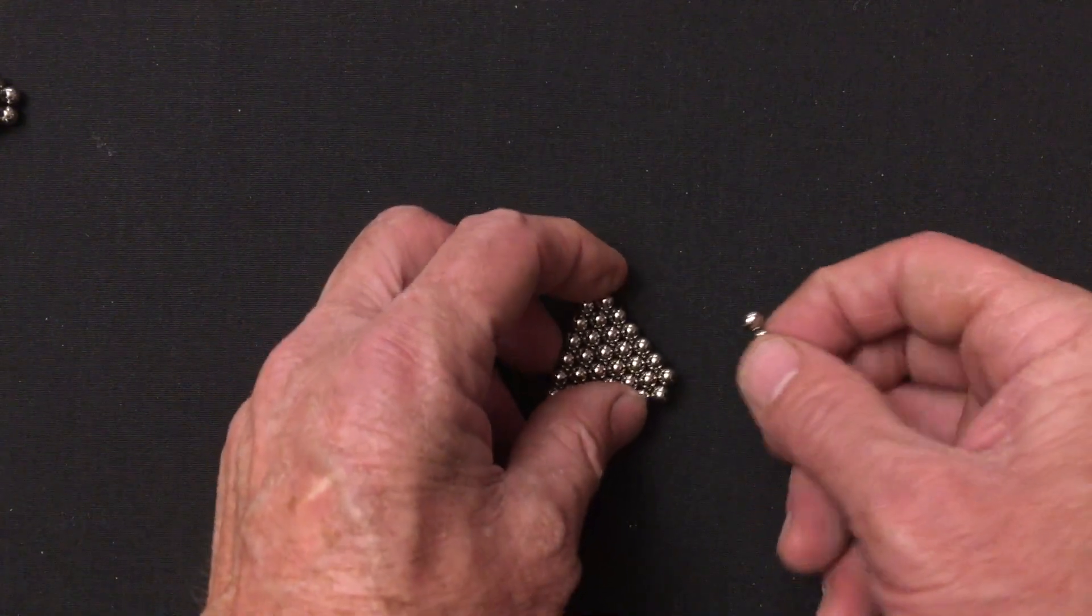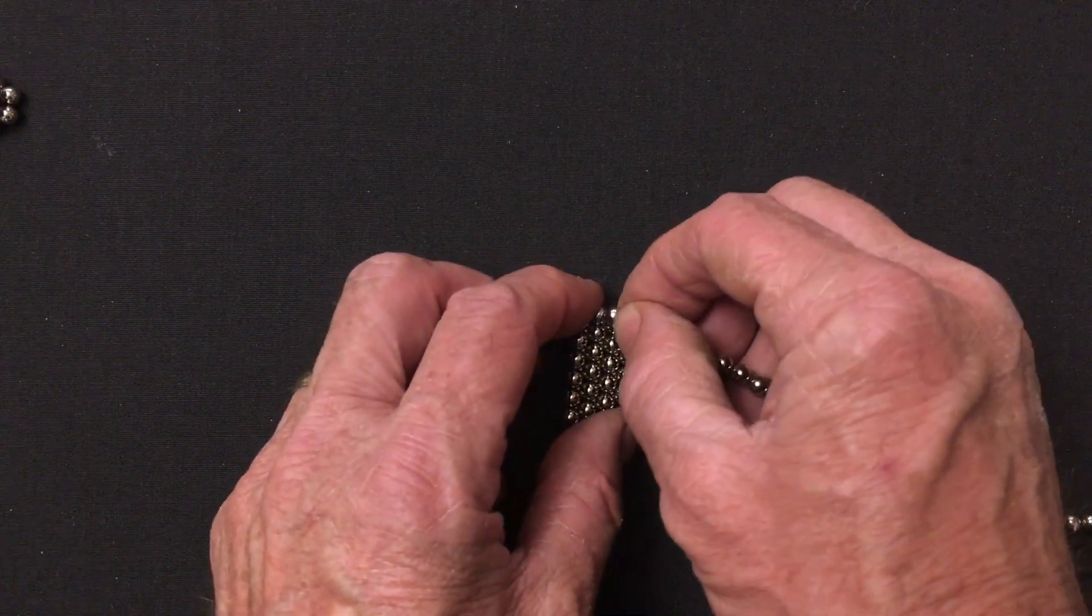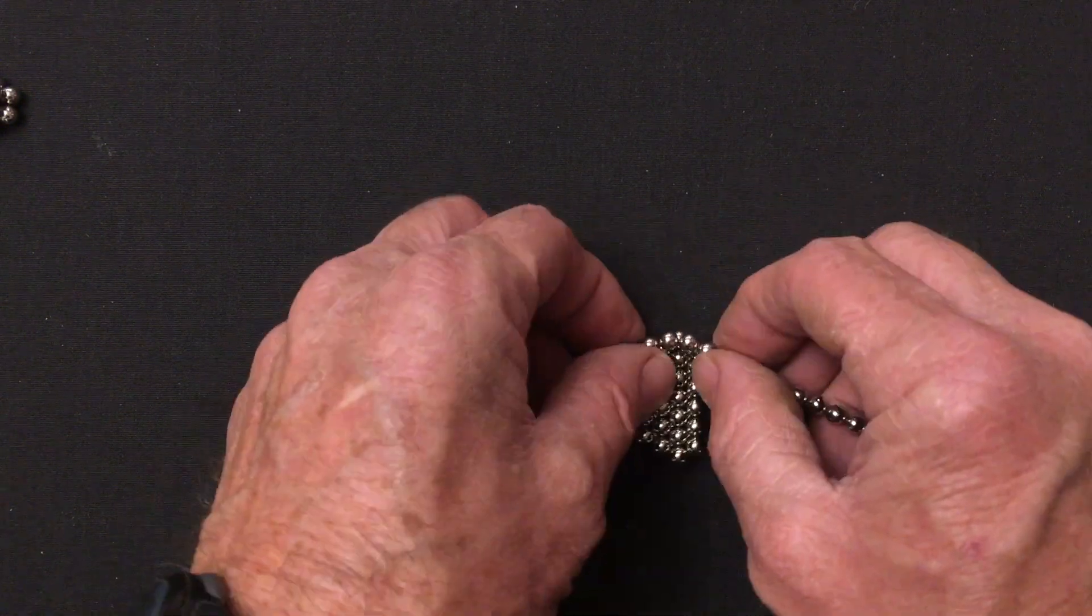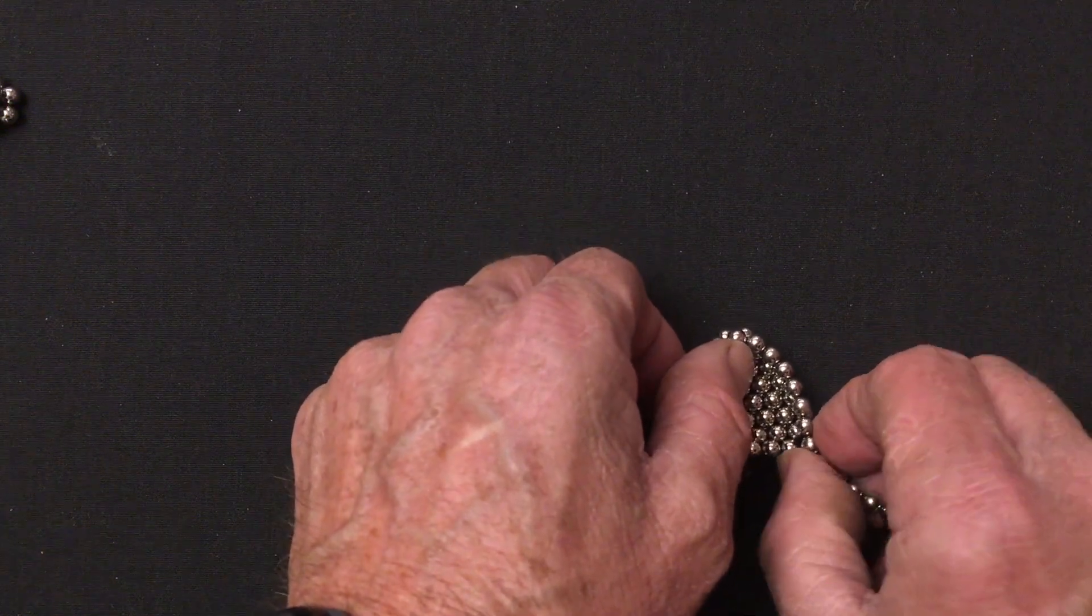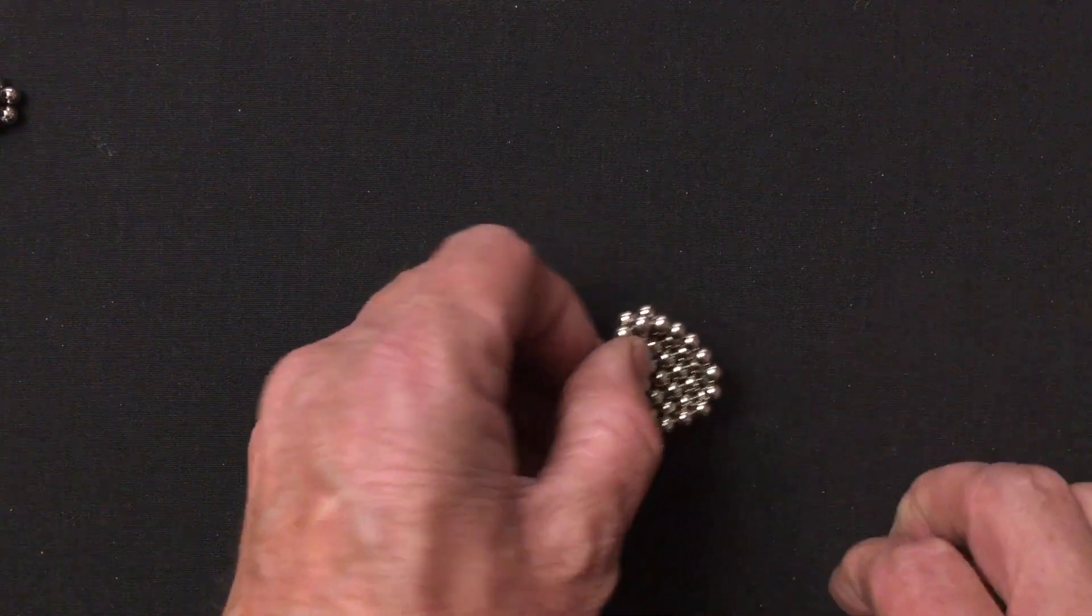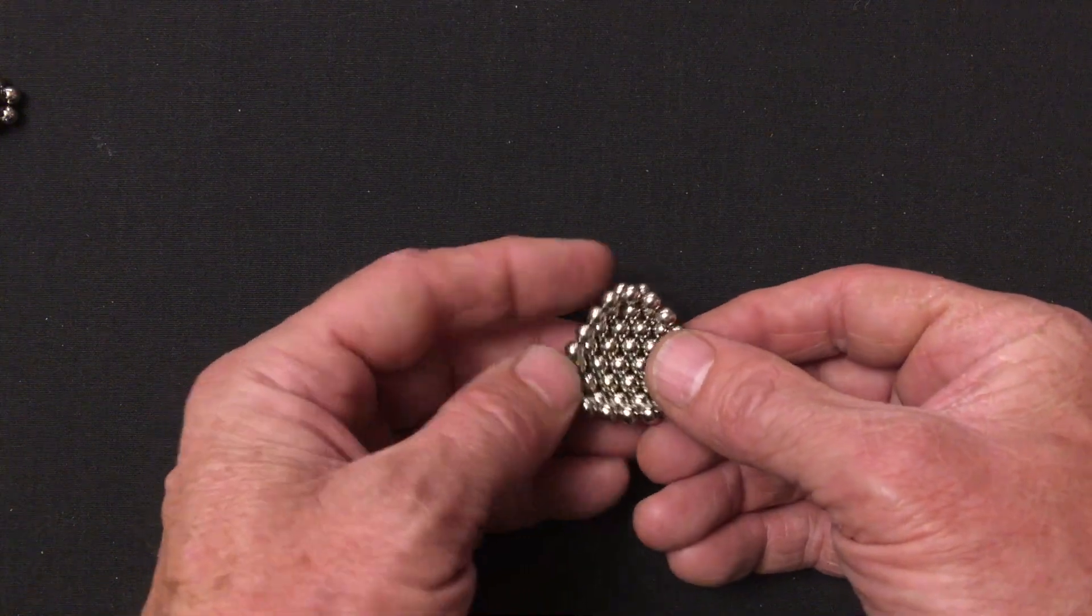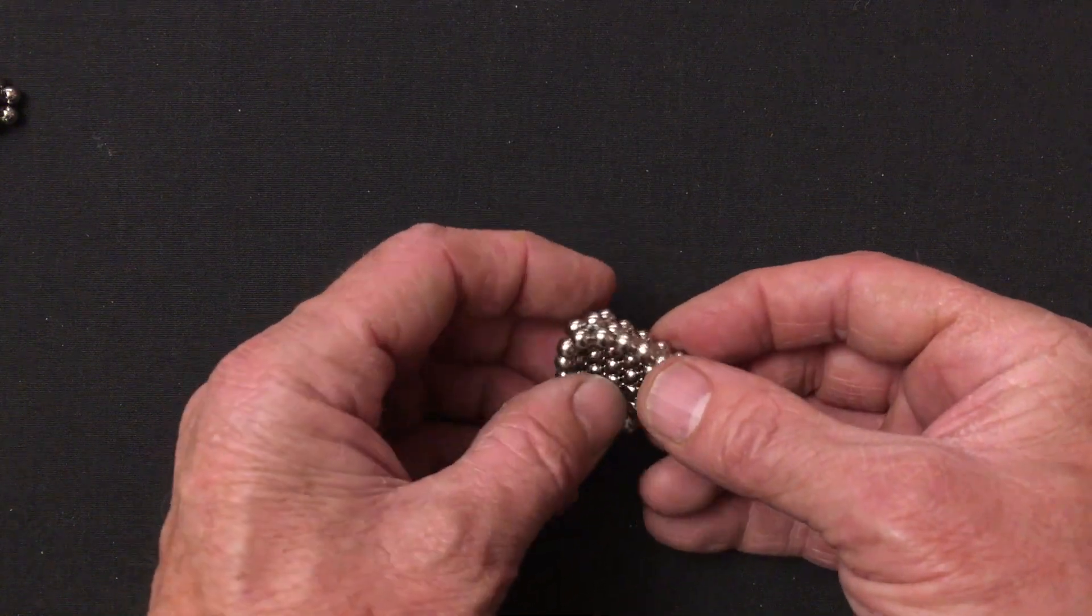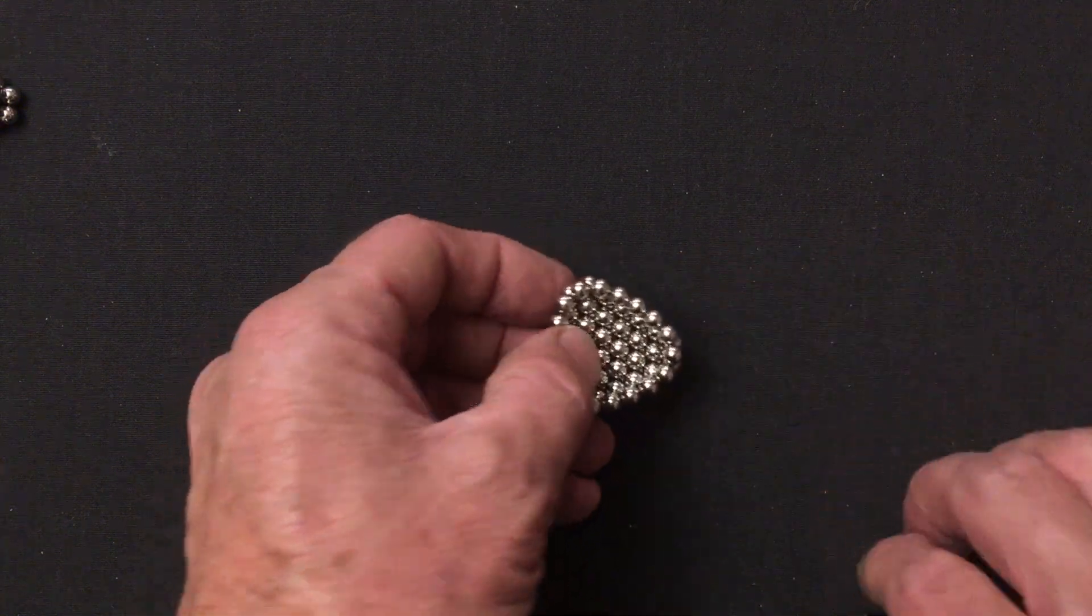The next step is to add a ring of magnets to the outside of this structure. Outside and above. So you can see that the magnets that I've added are mostly above the outside ring but a little bit to the outside of it.